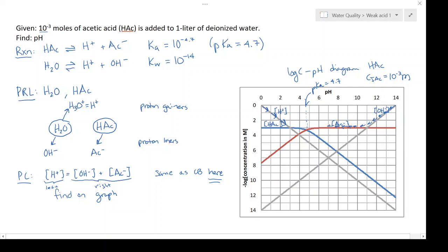Then you get to the point where it runs into the hydrogen line. This is the point that's satisfied by that equation, and it tells me that this solution has a pH of about 3.9.